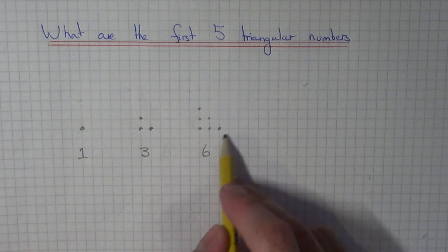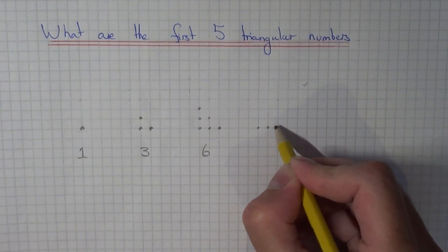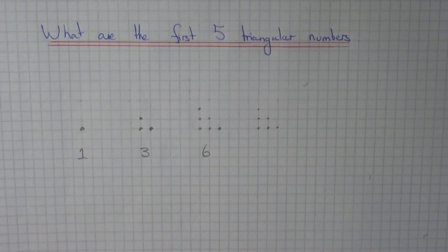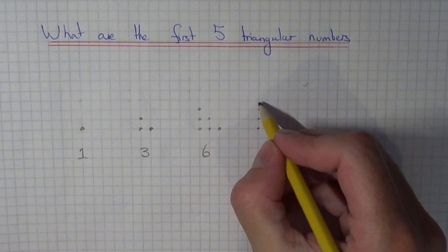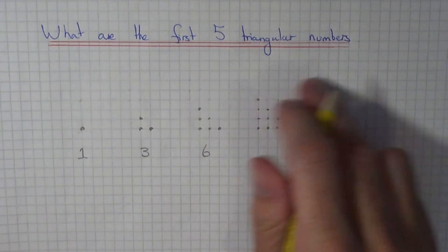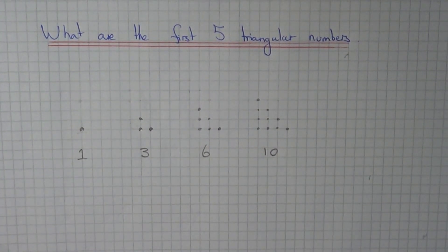So for our next one let's just copy down the shape that we've just made. And again we just need to now add another diagonal row of dots.